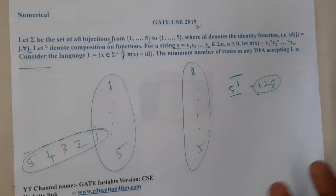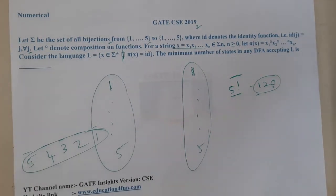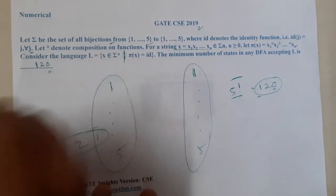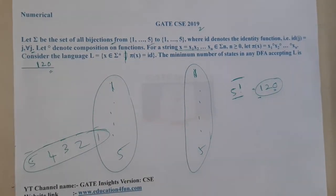If we are having 120 different functions, whenever you want to construct a DFA for this, you also need these 120 different paths. A minimum of 120 states are required for this particular DFA.